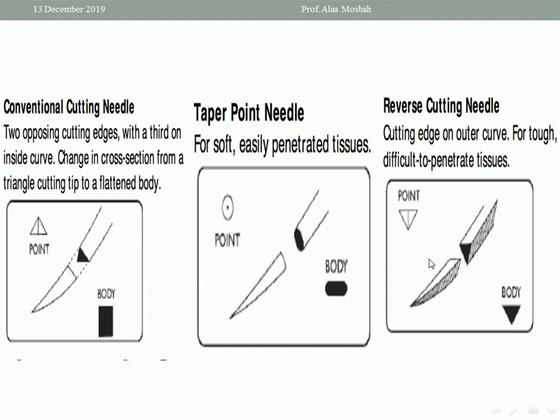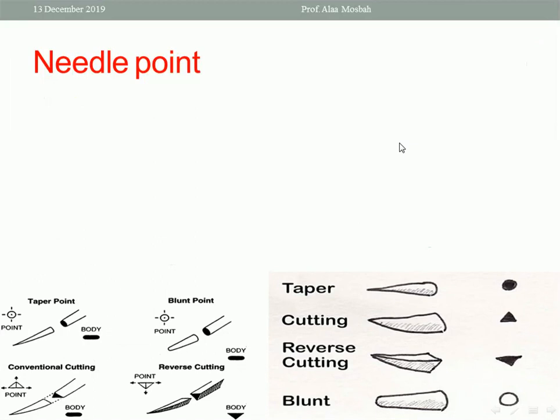The needle point can be tapering, cutting, reverse cutting, or blunt. If the circle mark has no point inside, it is blunt. If inside there is a black point, this is the taper. If a triangle, it is the cutting type. If an inverted triangle, this is the reverse cutting type. The needle point acts to burst the tissue and can be either sharp or blunt.